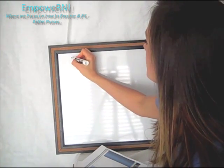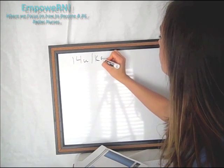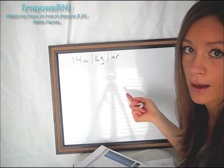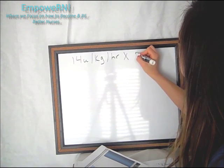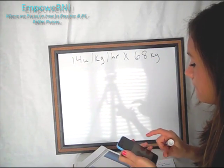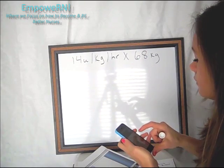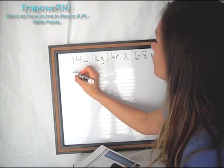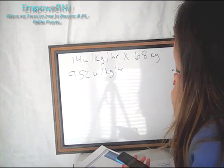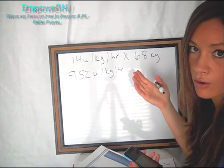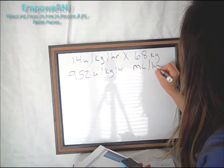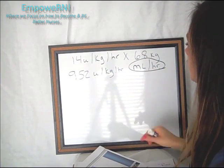So we take 14 units per kilogram per hour. And that's our ordered dose. Our patient, he weighs 150 pounds or 68 kilograms. So we multiply that by 68 kilograms. And we get 68 times 14 is 952. So 952 units per kilogram per hour. And that is our ordered dose. Now, what do we want? We always need to know in dimensional analysis what we want. We want milliliters per hour.